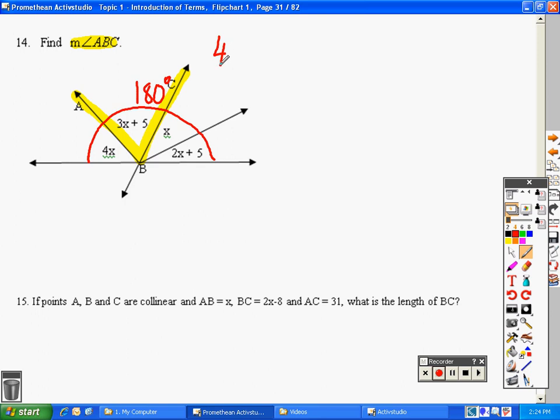We know that 4X plus 3X plus 5 plus X, I'm working my way around the angle, plus 2X plus 5 equals 180 degrees.